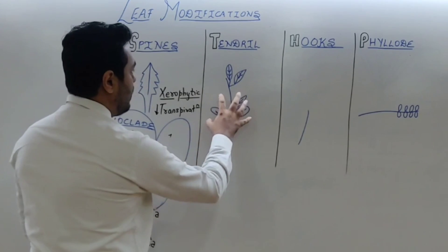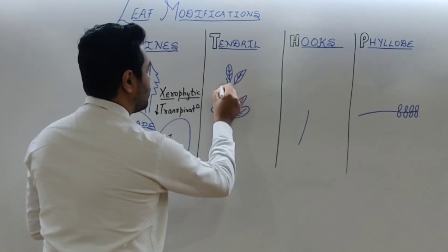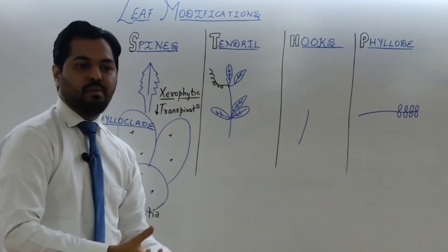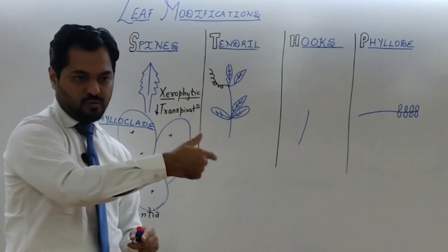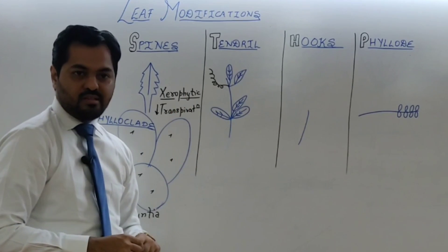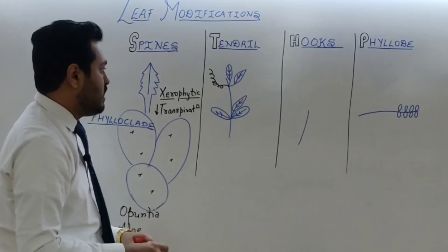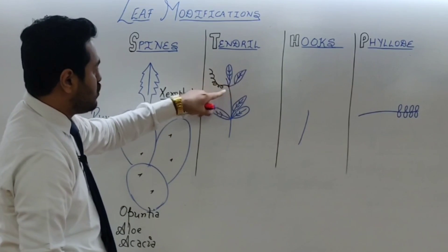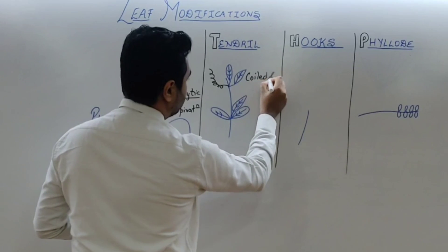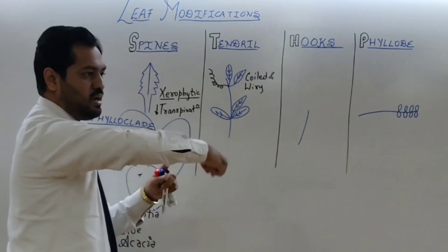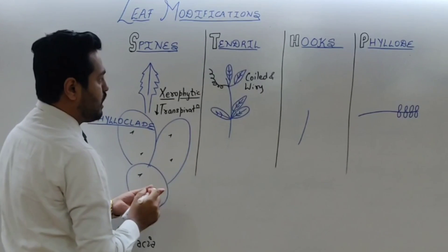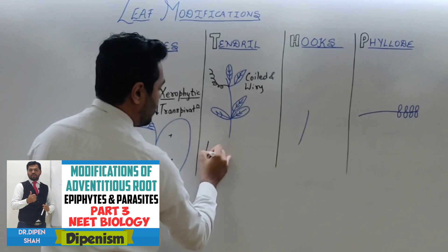In some plants, the entire leaf becomes thin, coiled, and wiry. These structures — when in root, we called them climbing roots (e.g., Pothos/money plant); when in stem, we called them stem tendrils (e.g., Vitis vinifera/grapes). Here, when the entire leaf is completely converted into a coiled and wiry structure, and it entwines around an object for mechanical support, we call it a leaf tendril.